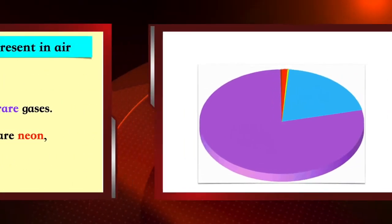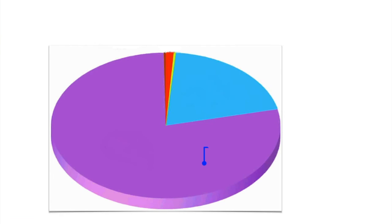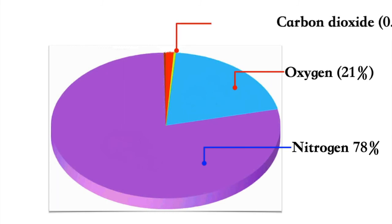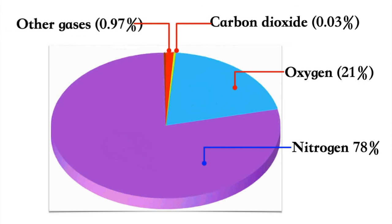And here is a recap of what we have learned. The gases that are present in air include the following: Nitrogen, 78%. Oxygen, 21%. Carbon dioxide, 0.03%. Other gases, 0.97%.